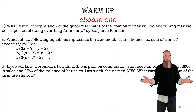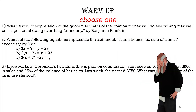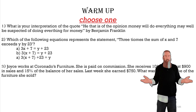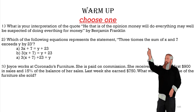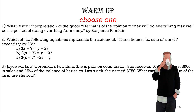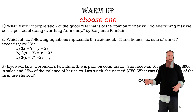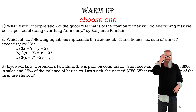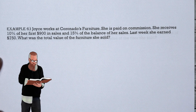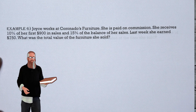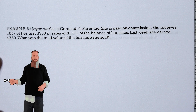Now let's look at a problem you'll be able to do by the end of this lesson. Joyce works at Coronado's Furniture. She is paid on commission — she receives 10% on her first $900 in sales and 15% of the balance of her sales. Last week she earned $750. What is the total value of furniture she sold?